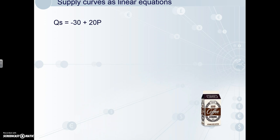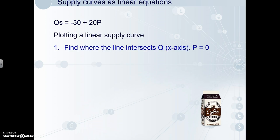The example in the syllabus is QS equals negative 30 plus 20P, so we'll use that and say it's the supply curve for iced coffee. There are four steps, again, to plot a linear supply equation — very much the same as plotting a demand equation. Firstly, you find where the line intersects the x-axis at price equals zero. You plug that into the equation, solve for quantity supplied, and we get negative 30. That shows how unwilling Farmers Union would be to supply their iced coffee at price equals zero.